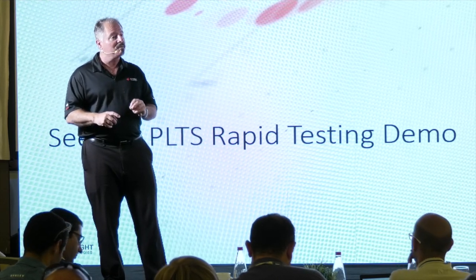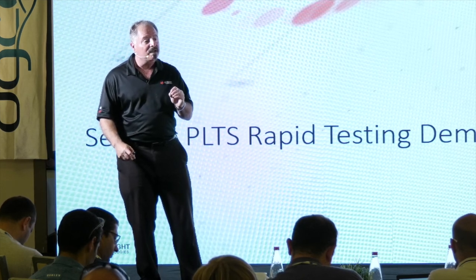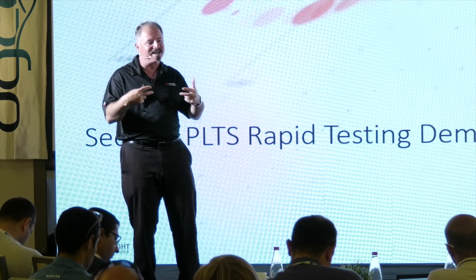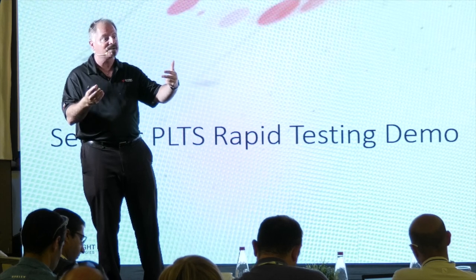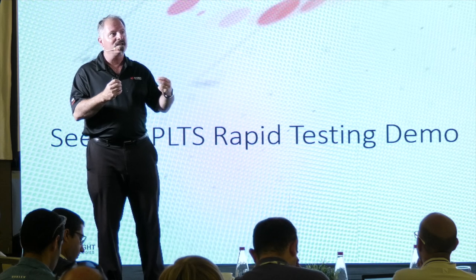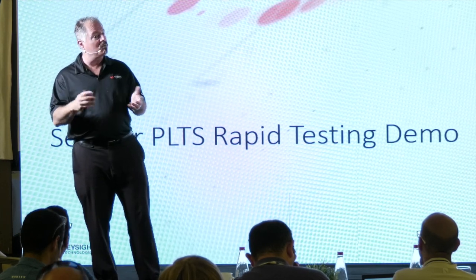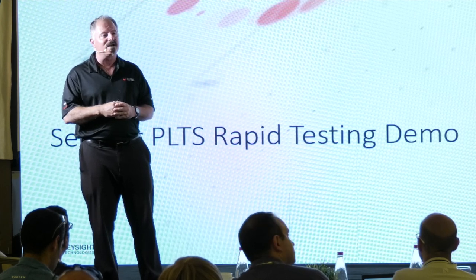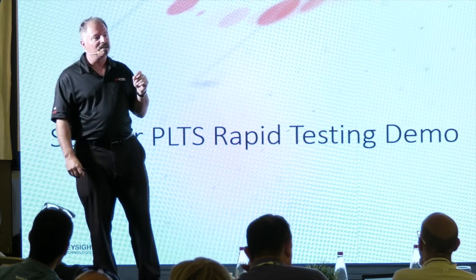The de-embedding algorithm itself is not complicated — many tools can do it. The trick is getting an accurate model of the structure to de-embed. The fixture normally has coaxial on the input but a different connector on the output, like an Air Max. The easiest way to get that accurate S-parameter for de-embedding is automatic fixture removal (AFR). The alternative is modeling and measurement together. Look for the app note 'The ABCs of AFR' on our website.